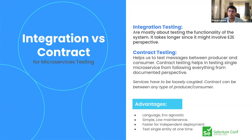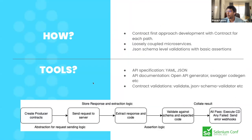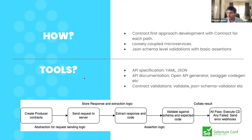What you need to ensure in this approach: services are loosely coupled and independently deployable. Advantages over integration tests: it's language agnostic — abstractions can be written in any language; it's environment agnostic; easier to maintain with multiple API documentation integrations; a faster testing method for independent services. How do we go about it: development can follow a contract-first approach, though it's not mandatory. Once contracts are available in JSON, you can use a generator or independently create documentation. We perform JSON schema-level validation along with basic assertions on top of the contracts.